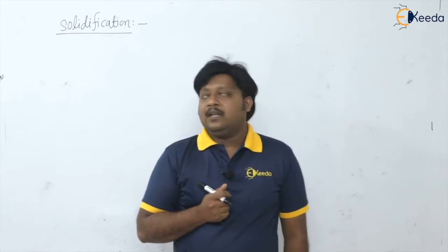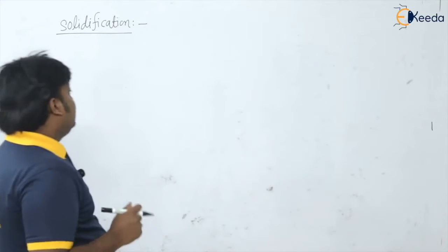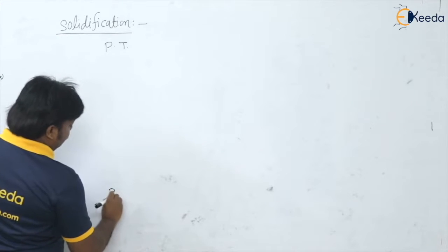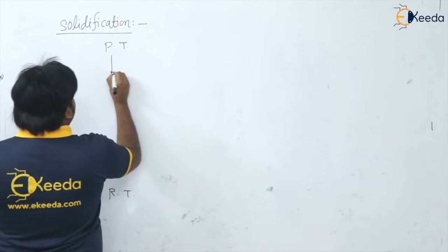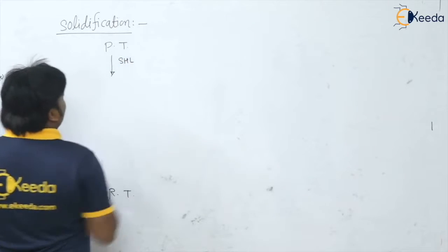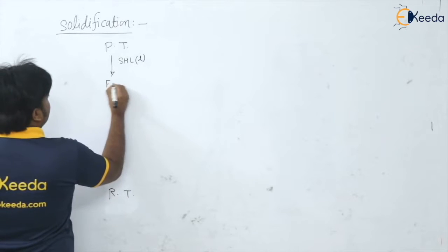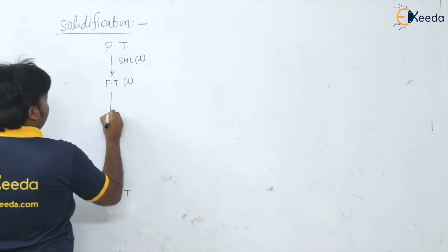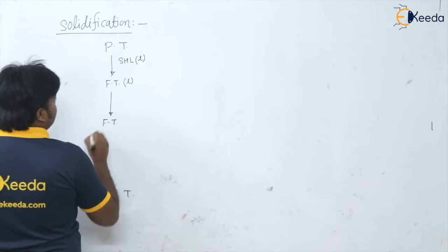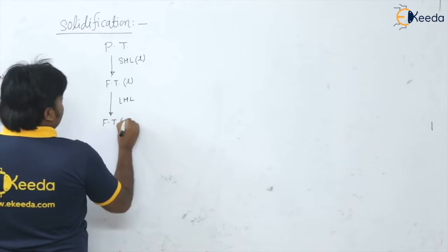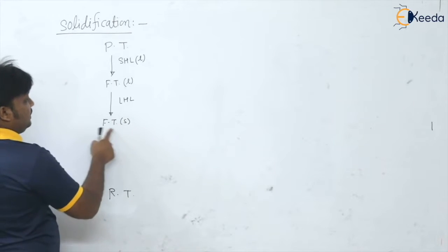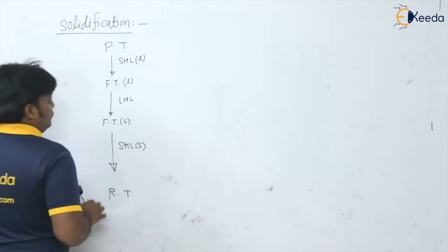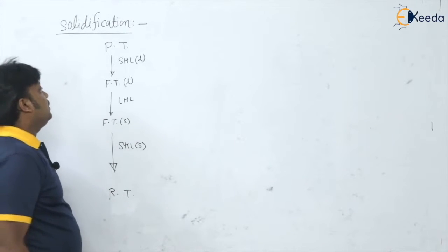The material is cooling from the pouring temperature to the room temperature. First there is sensible heat loss in the liquid stage, then the material comes to the melting point or freezing point — it is in liquid and there is a phase change but temperature remains the same, that is latent heat loss. Then it comes to the solid freezing temperature and from here again there is sensible heat loss in the solid state down to room temperature.